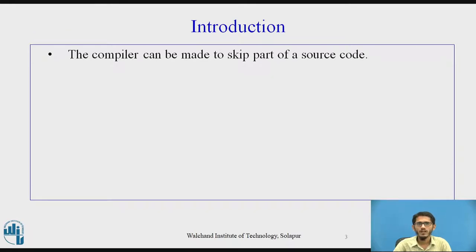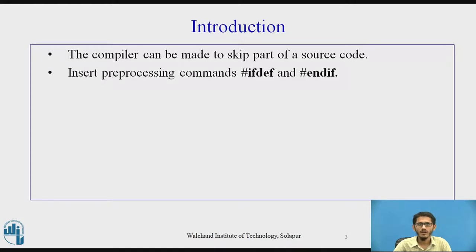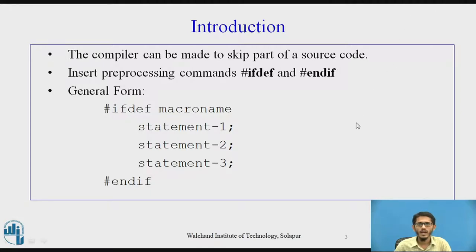Let us have an introduction. Sometimes the compiler can be made to skip part of a source code, meaning some part of code can be kept uncompiled, with the help of features available in C language. For that we may use the preprocessor commands #ifdef and #endif. The general form is: #ifdef <macro_name>, then a few statements, then #endif. If the macro is not defined, statements 1, 2, and 3 will not be compiled; they are compiled only if the macro is defined.